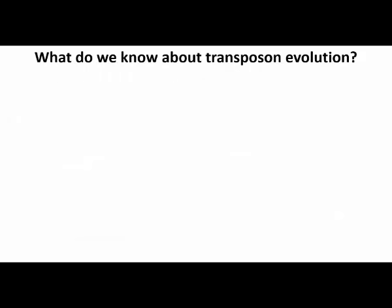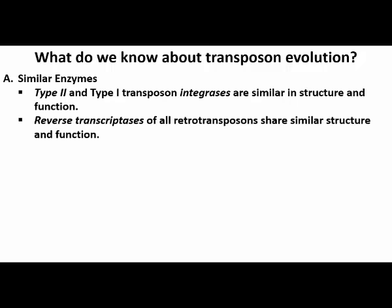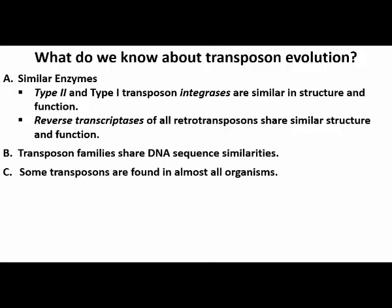Here is some of what we know about transposon evolution. Enzyme similarities exist between DNA transposons and retrotransposons. For example, transposases and integrases that catalyze transposon insertion into target DNA share amino acid sequence similarity and similarity in the domain structure involved in integration. Among retrotransposons themselves, the same is true for reverse transcriptases. DNA sequence comparisons across transposons reveal that they occur in families of related sequences, indicating that during evolution, groups of sequences retain similarities while others diverge. Also, some transposon family members, like Mariner for example, exist in almost all organisms across the eukaryotic spectrum.